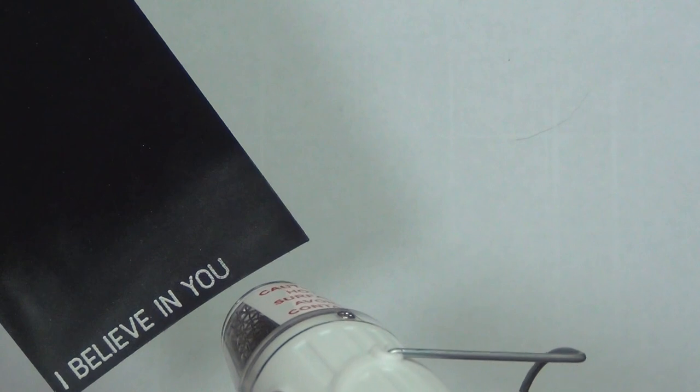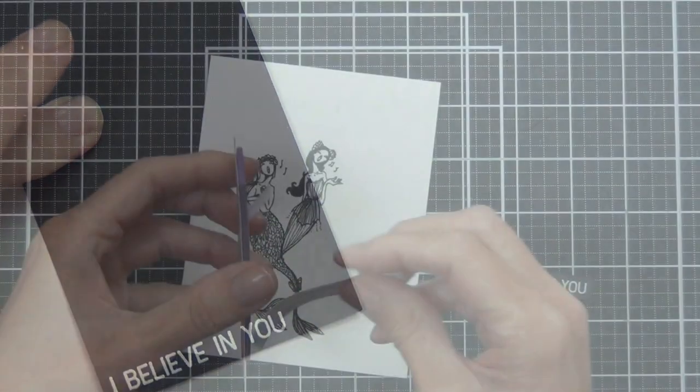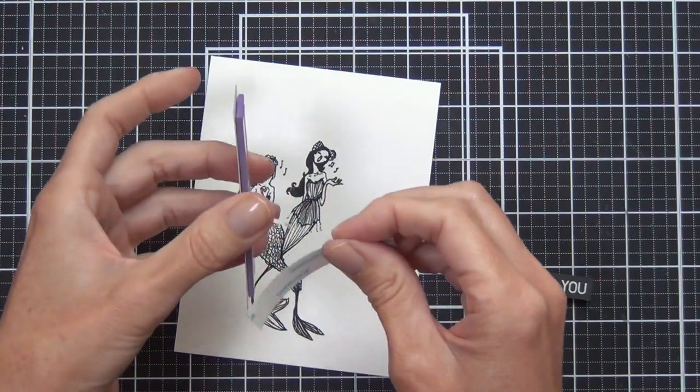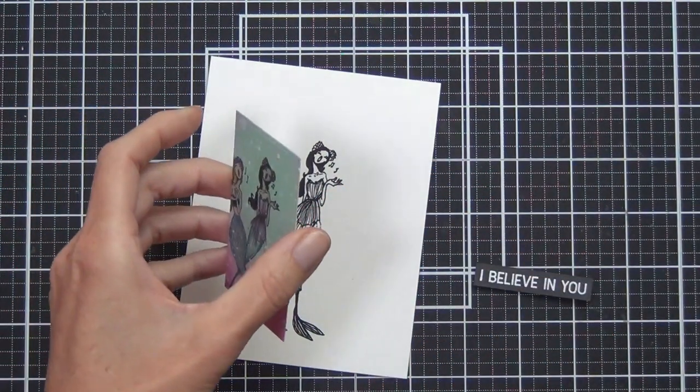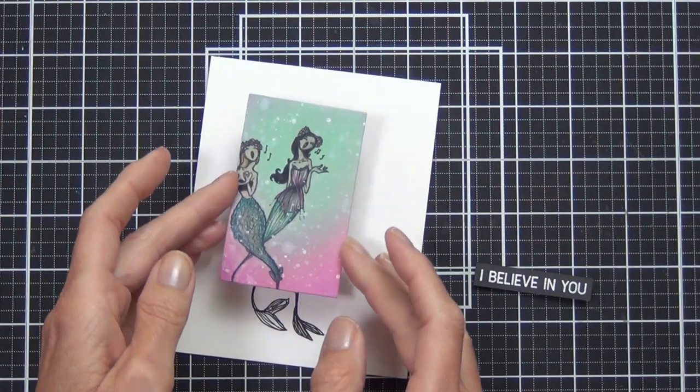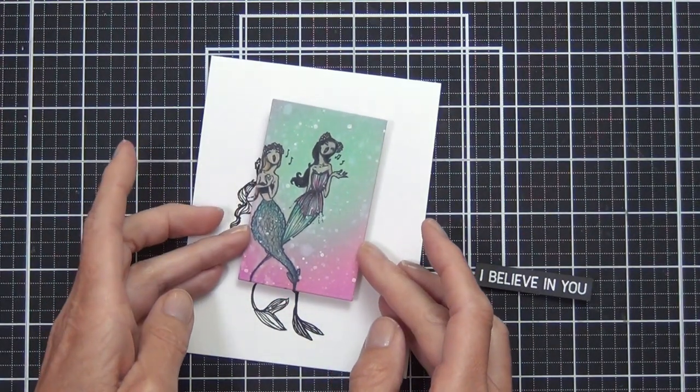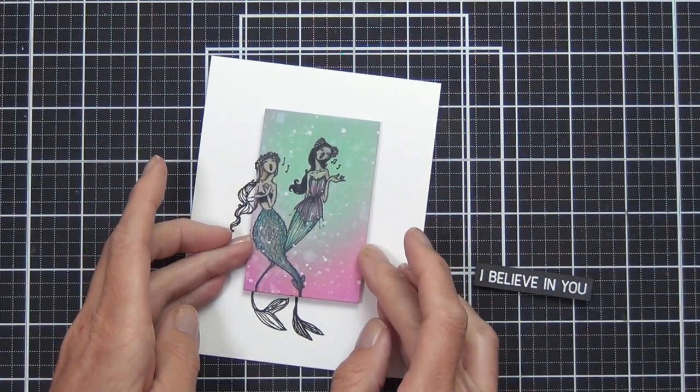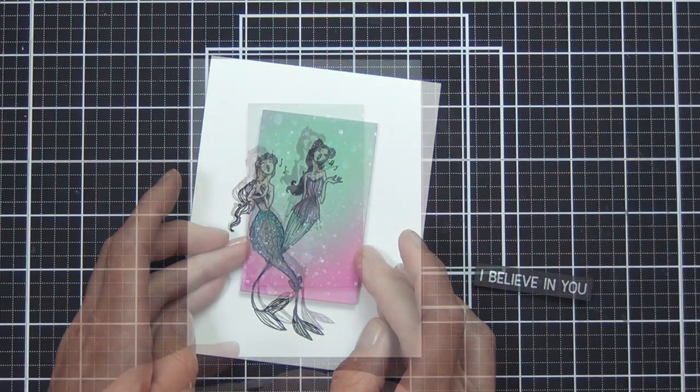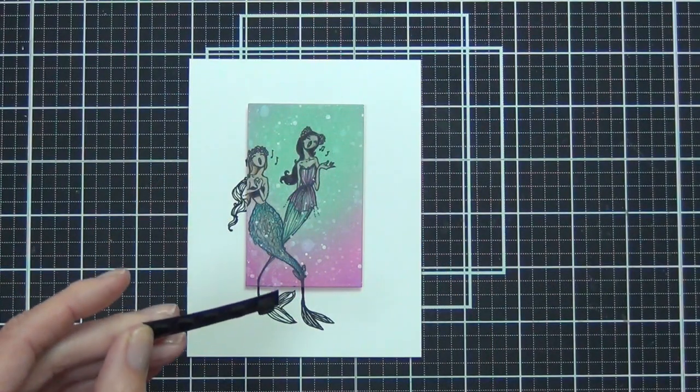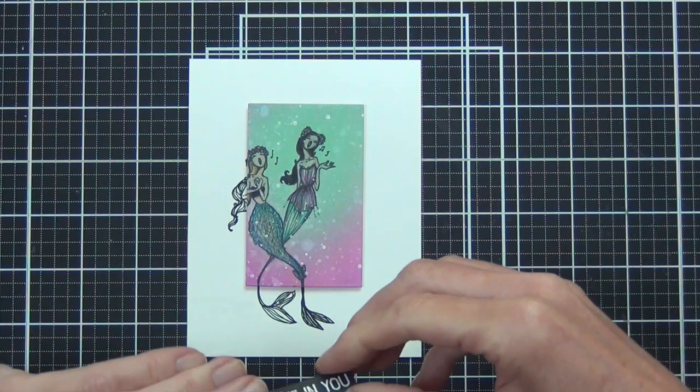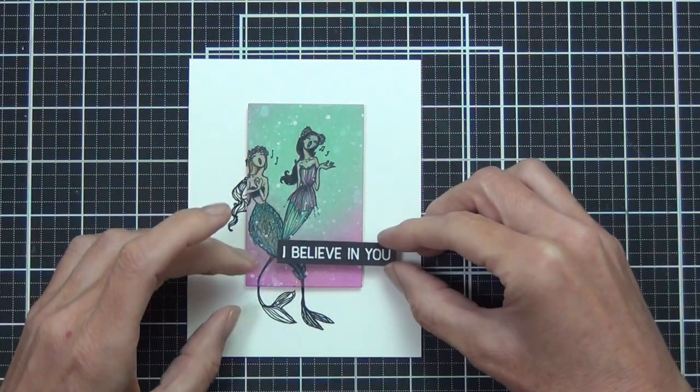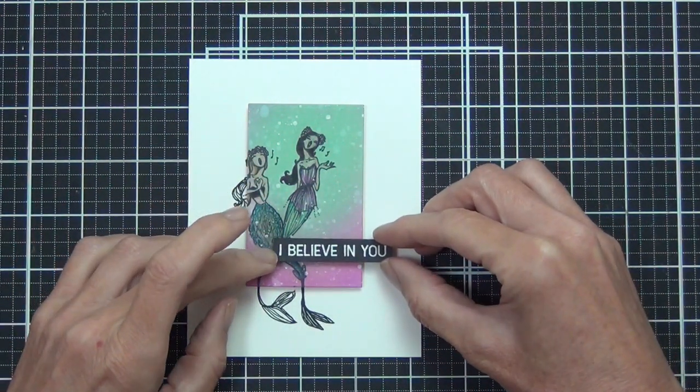I used another sentiment from the Letter Board Minis set and white heat embossed that on some black cardstock. Then all that's left to do is to pop the image up on the front of the card so that it matches the image that I stamped on the card front. I didn't color the image on the card front, I just left that as black and white. Then I popped up the sentiment and also added a few of the clear droplet gemstones.